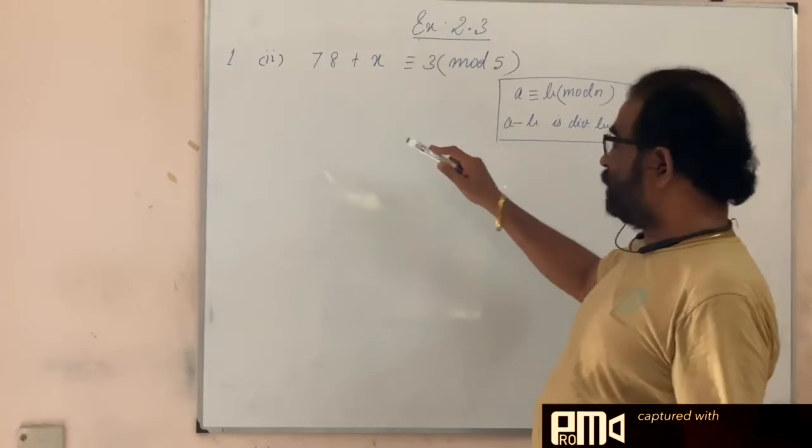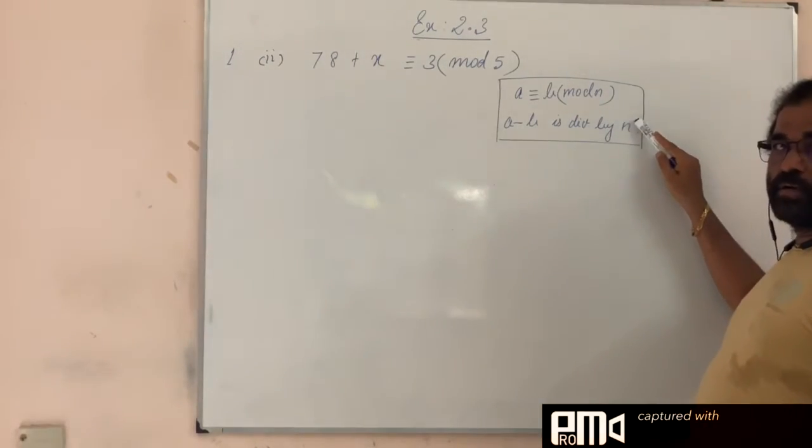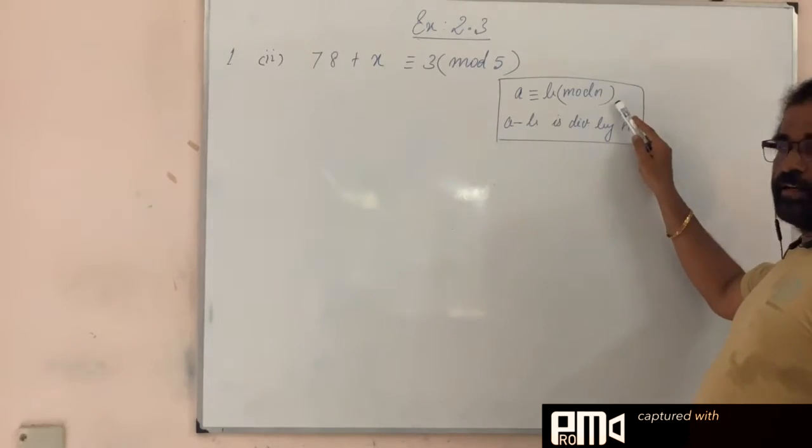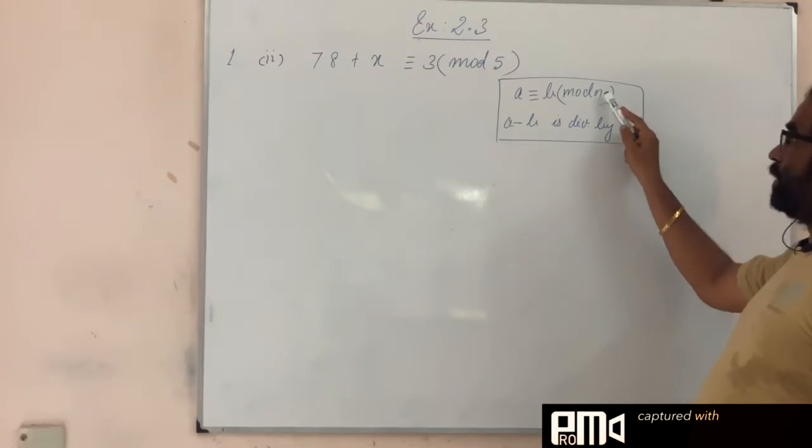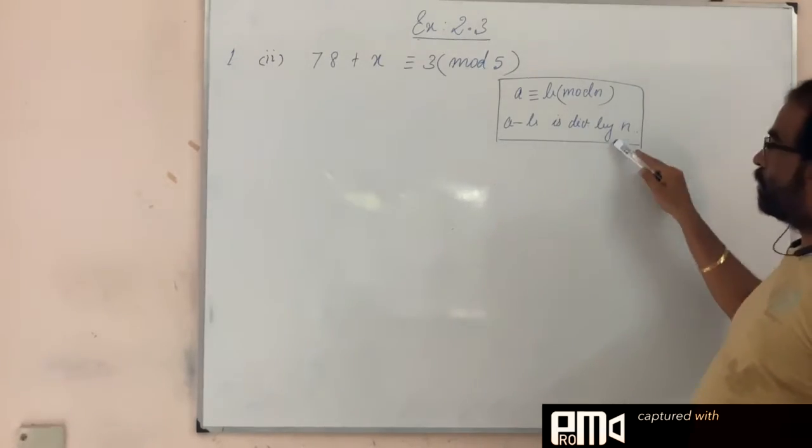Before then, you always remember this property in modular arithmetic: a is congruent to b mod n means a minus b is divisible by this n. This property you always remember.